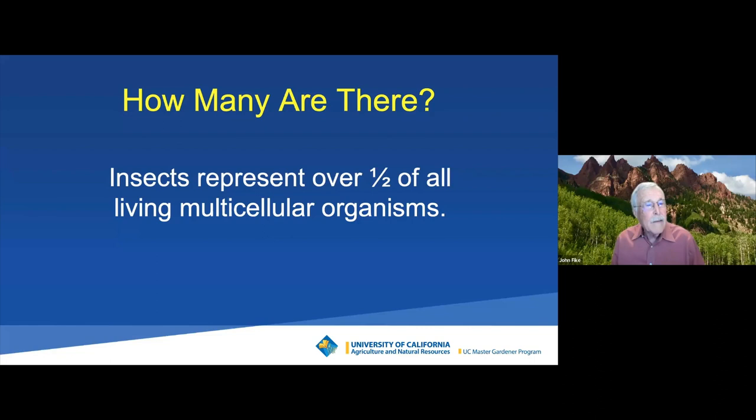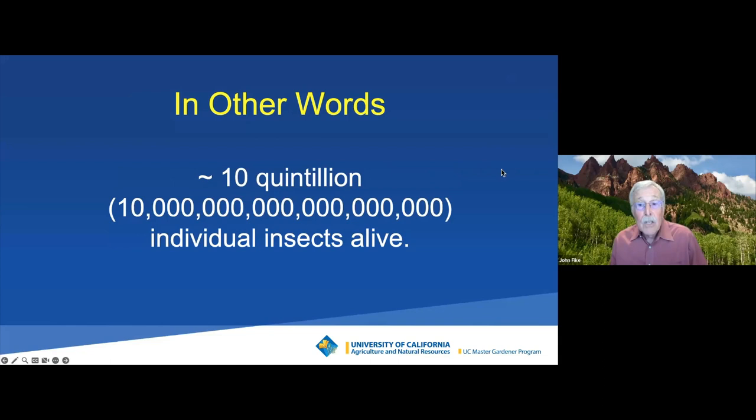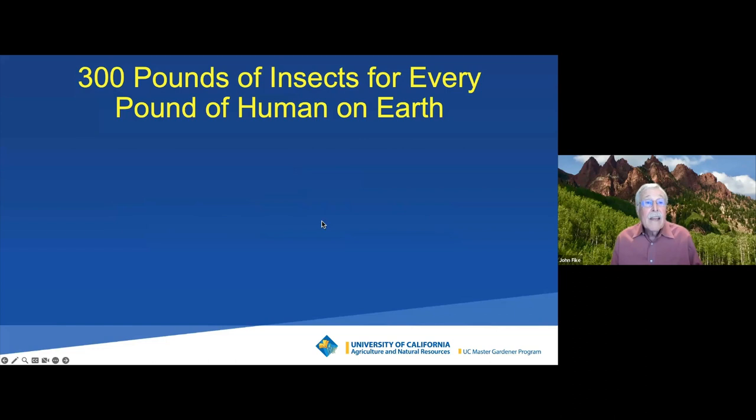The Smithsonian estimated that there were 10 quintillion individual insects alive — a quintillion is a billion billion. It's hard to fathom that number; it's like trying to understand the universe or infinity. Other scientists estimated there were 300 pounds of insects for every pound of human on Earth.